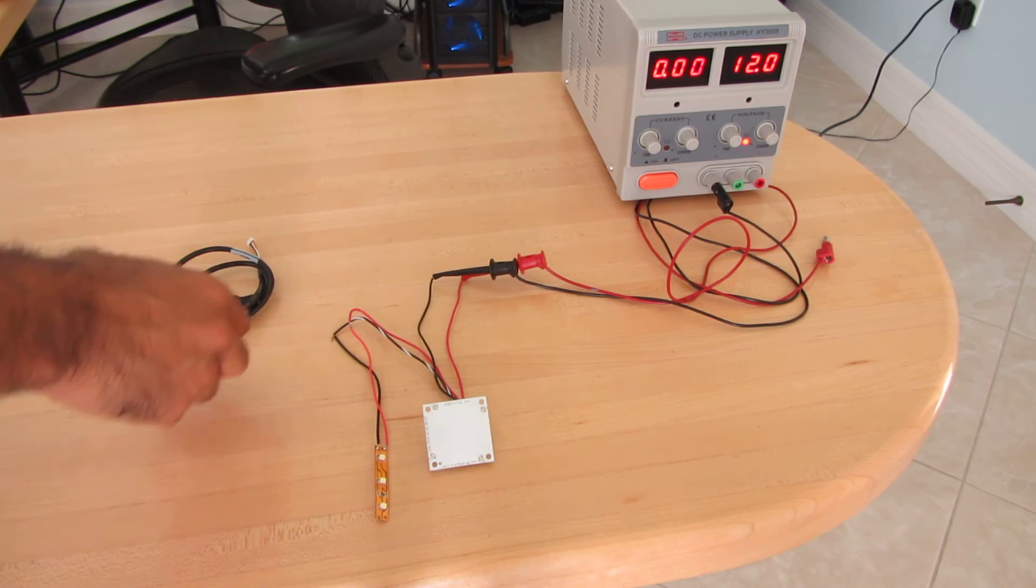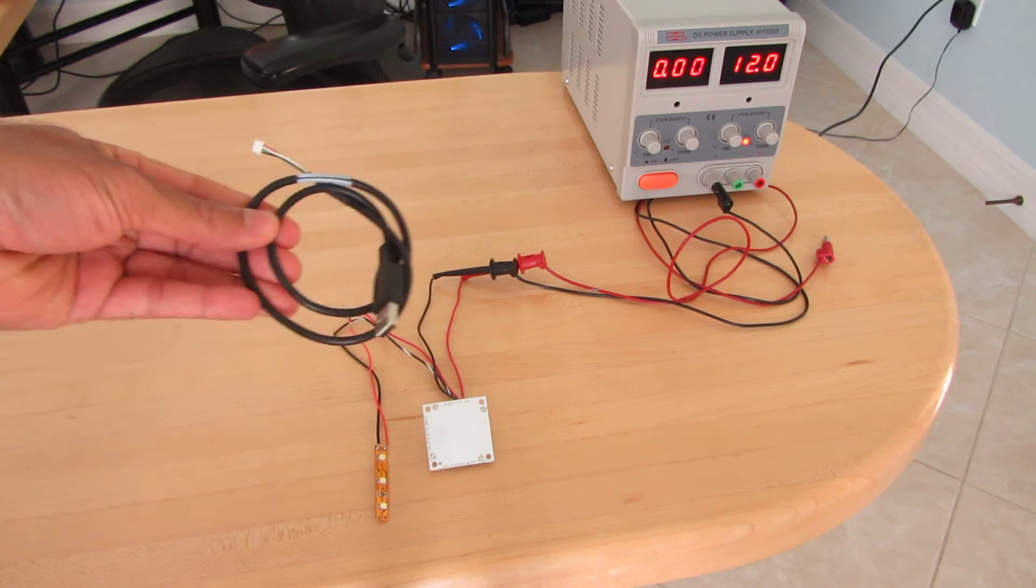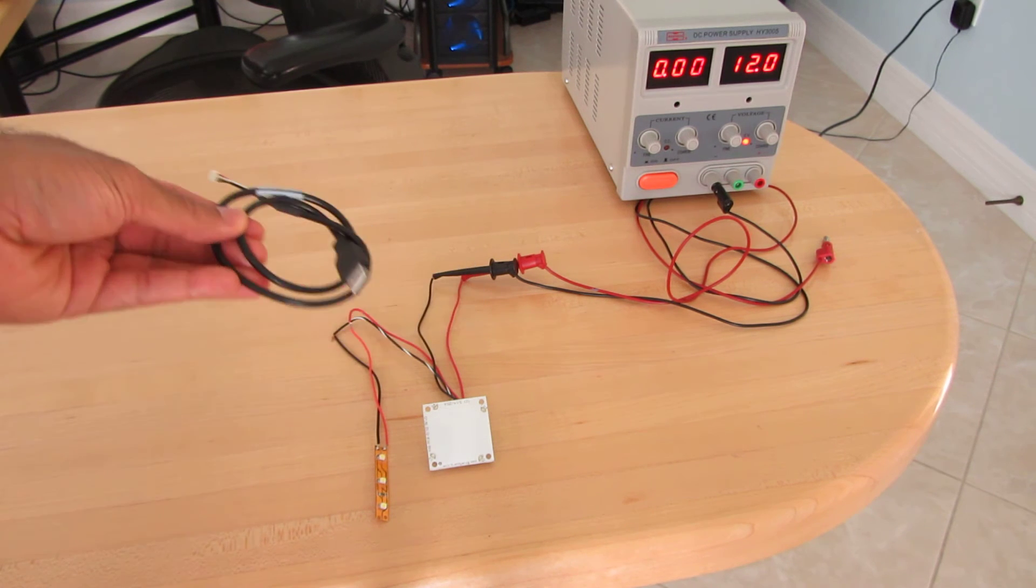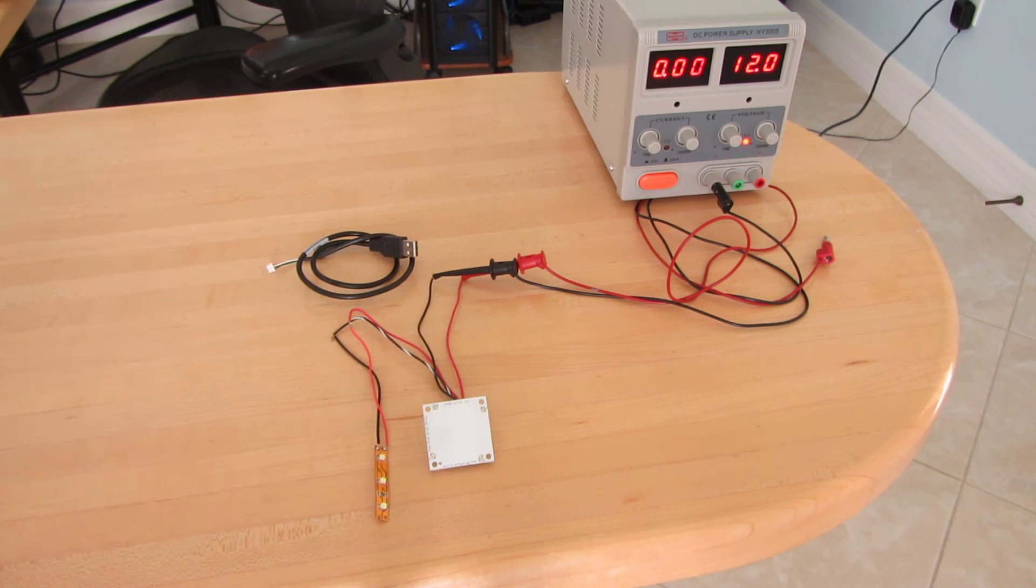The first thing you're going to do is install the USB cable and plug it into your computer. Then you're going to load our custom configuration utility and tune your button.